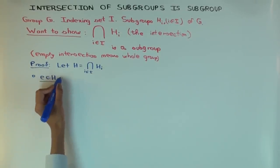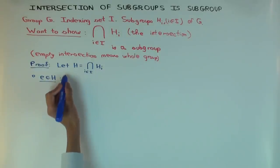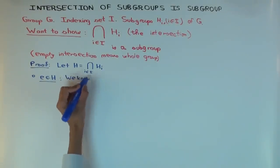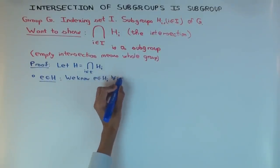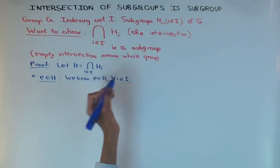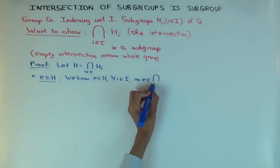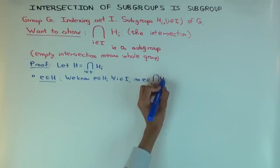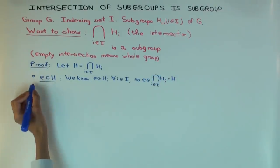What do we know? It's an intersection of a bunch of things, and we know that each subgroup has the identity. So we know that e is in h_i for each i — for all i. So e has to be in h, in the intersection. If an element is there in every subgroup, it has to be in the intersection.